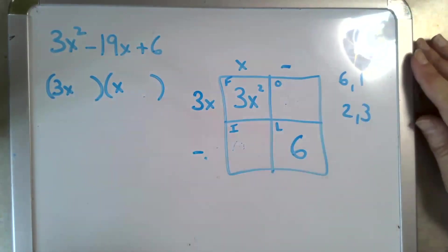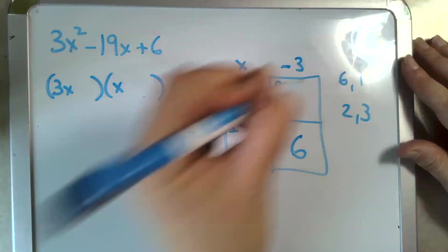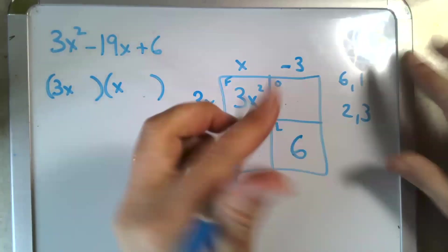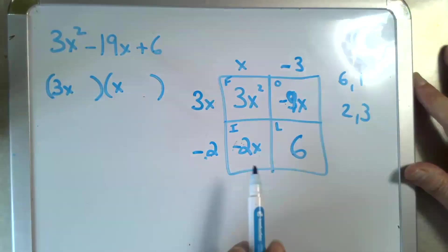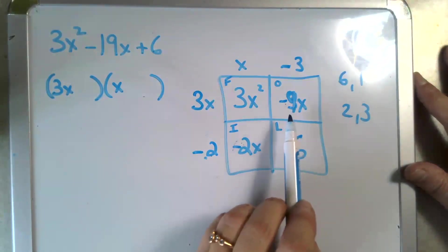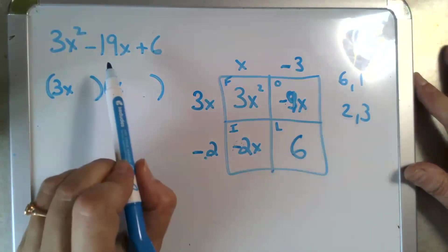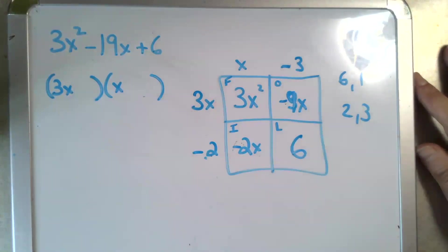This time, let's reverse them. Put the 3 here and the 2 there. We multiply again: -2x and -9x is still not -19x. So we try again.